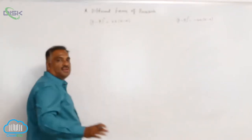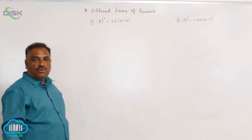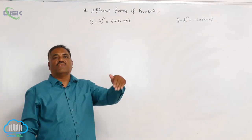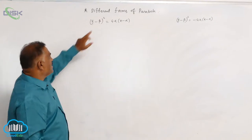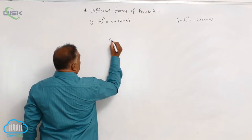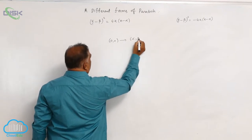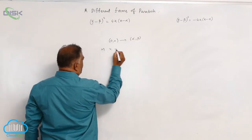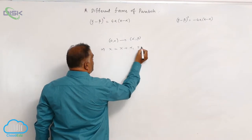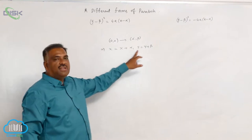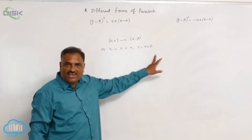We will discuss one more parabola. Previously, we have vertex as (0, 0). Now, shifting of vertex from (0, 0) to (α, β). Then, (0, 0) is shifted to (α, β), which implies x is equal to x plus α, y is equal to y plus β. That means, this is nothing but equations of translation.